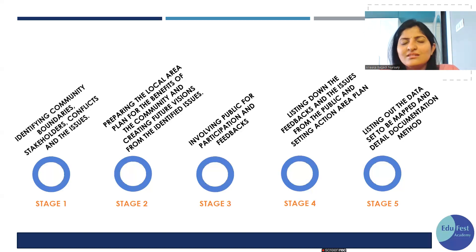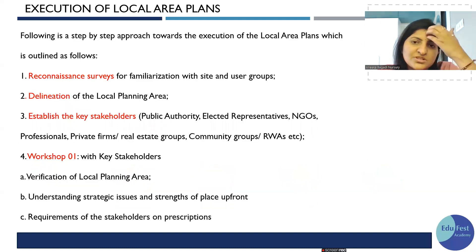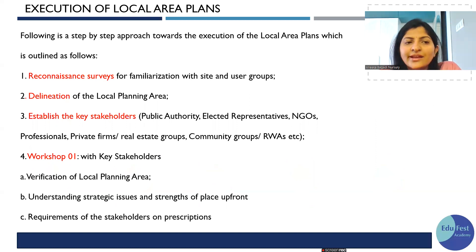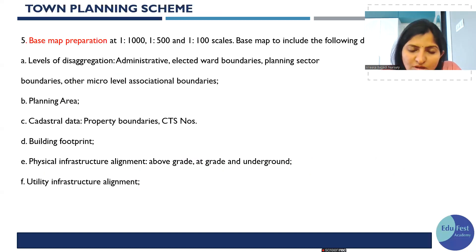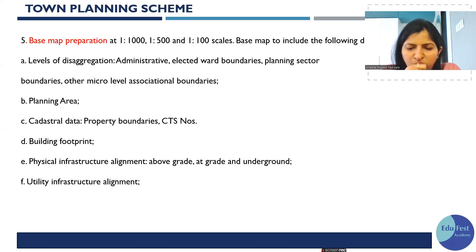This whole process is the Local Area Plan — it is like a DP but at a minor level. For execution, the types of surveys needed include: recognition survey, delineation of the local area, stakeholder workshops, verification of the Local Area Plan, understanding of issues, and proposing solutions. We also need to prepare base maps at appropriate scales.